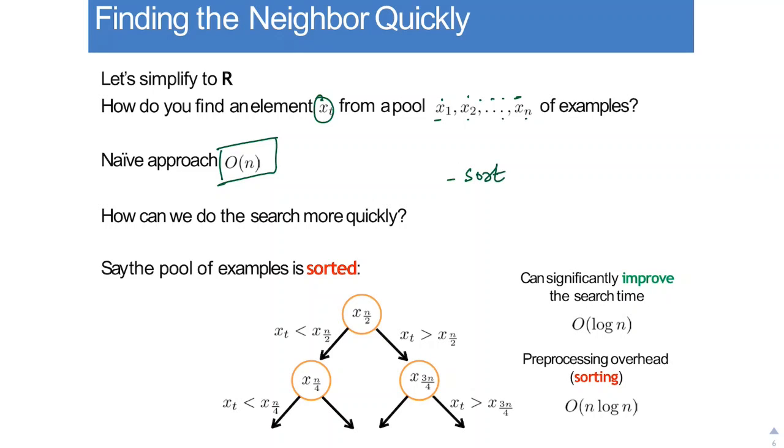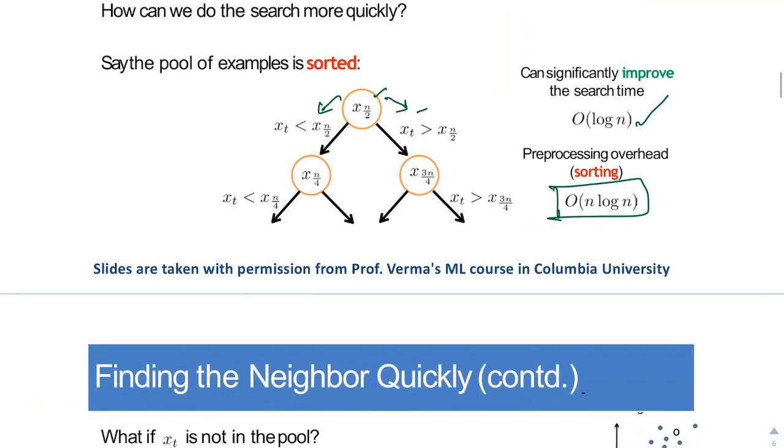Yes, we can first sort these examples. Sort X1 to Xn and then check Xt with the midpoint. So say this is the midpoint. If Xt is equal to midpoint, we found it. Otherwise, we go to the left if it's less and if it's greater than the midpoint, we go to the right and so on until we find Xt. So although there is a preprocessing overhead because we first have to sort these data points and say we sort using Merge sort, but we are significantly improving the search time from order N to order log N.